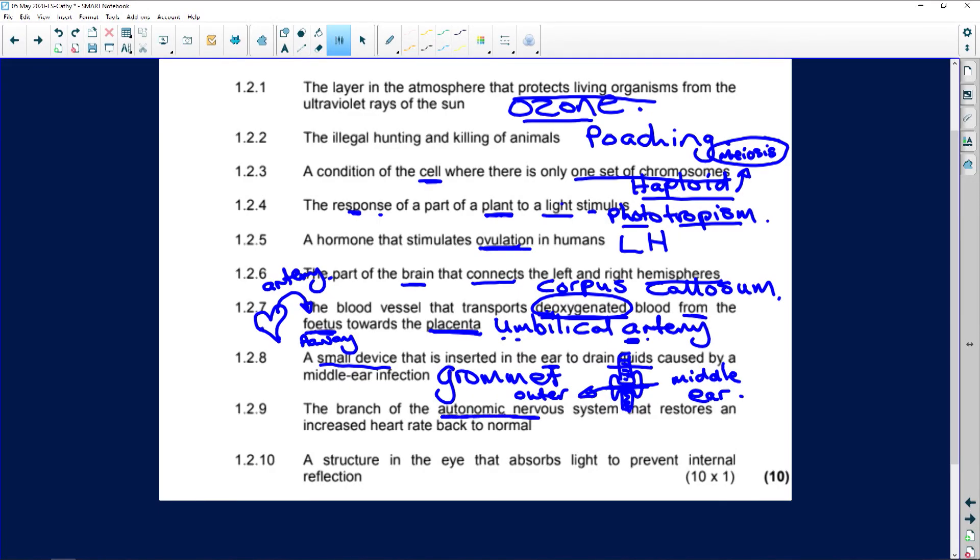The branch of the autonomic nervous system that restores an increased heart rate back to normal. So it goes from high increased to normal. That is going to be the parasympathetic nervous system. Remember, your autonomic nervous system is divided into two parts. You've got the parasympathetic nervous system, which calms the organs down. And the sympathetic nervous system, which just think sympathetic starts with an S. It stimulates the organs.